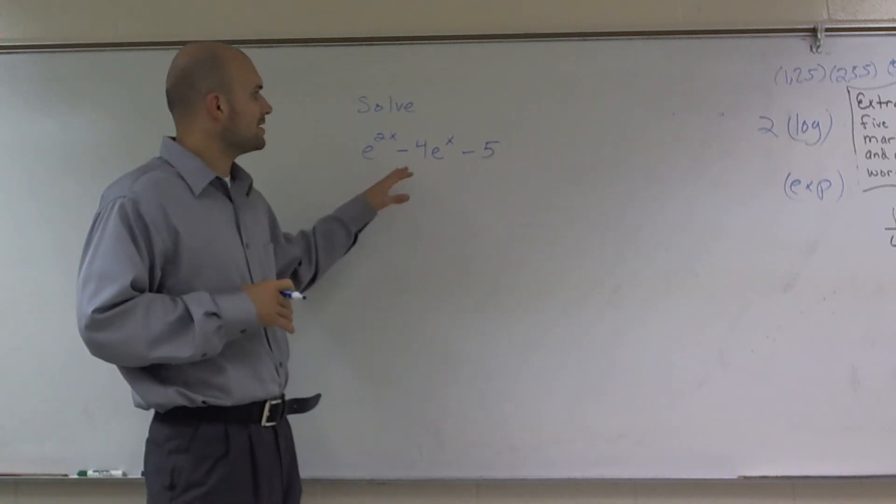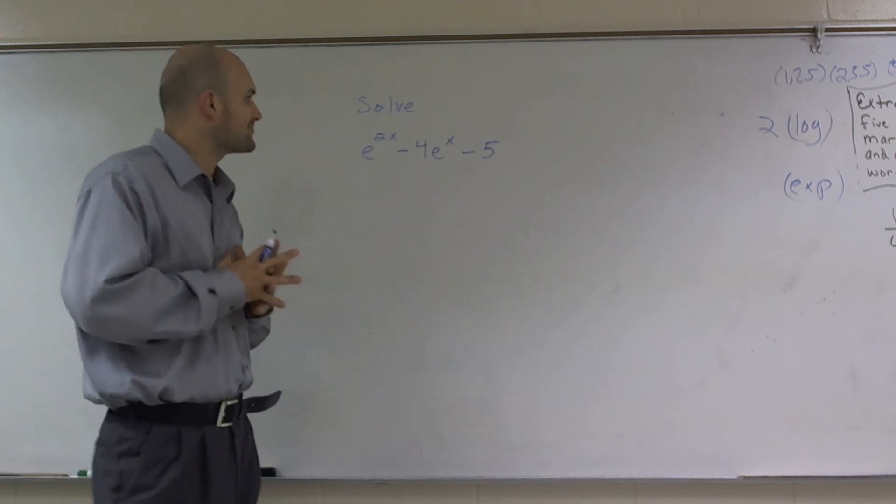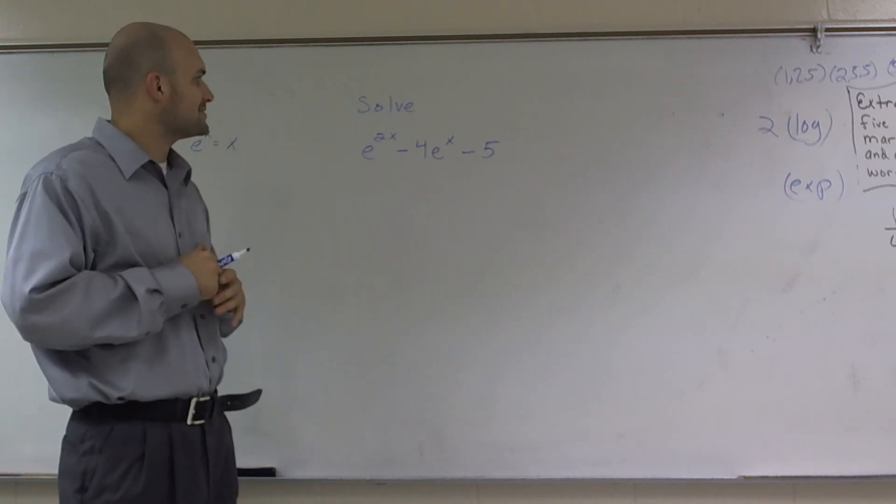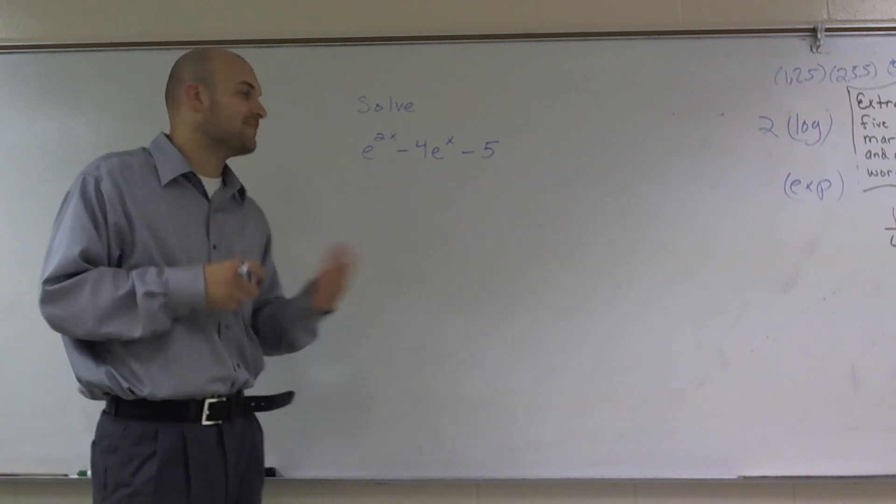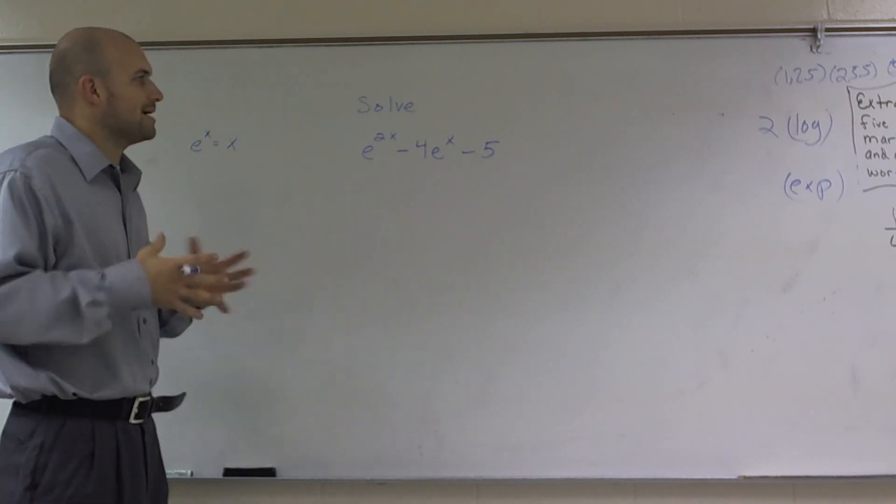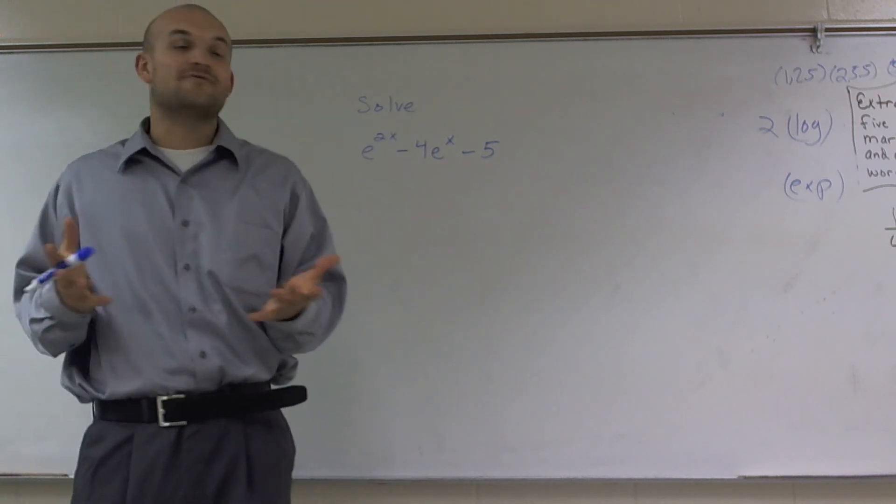OK, what I'd like to do is show you how to solve this quadratic with e. So it says e raised to the 2x minus 4 times e to the x minus 5. There's a couple problems that we can look at with this. This seems pretty confusing. It looks like you're probably going to have to do some factoring for this problem.